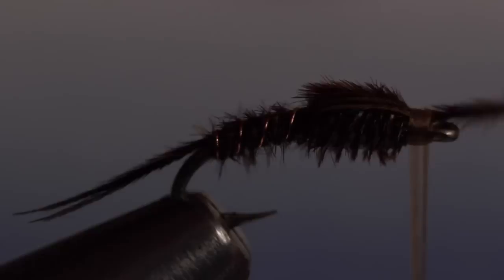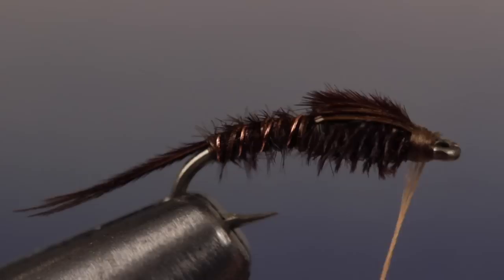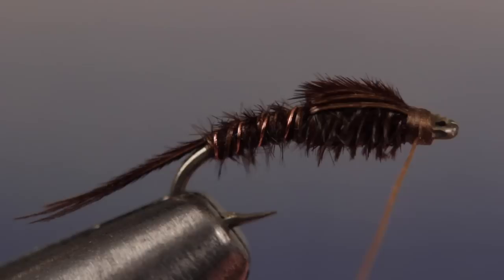Give your bobbin a clockwise spin to cord up the thread a bit. Do a four or five turn whip finish and snug it down nice and tight. You can then snip or cut your tying thread free.